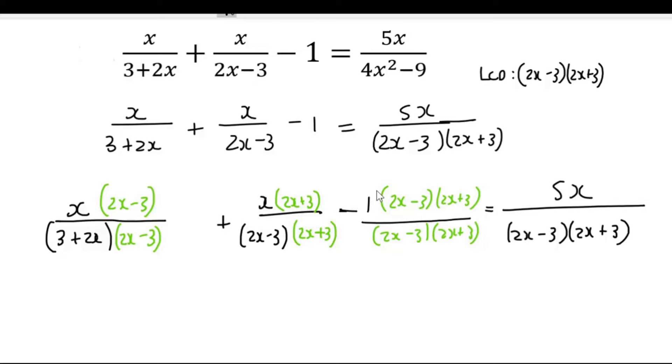And so guys, if you look carefully, I've gone and added everything that needs to be added. So for example, this one didn't have a 2x minus 3, so I multiplied it with the 2x minus 3 top and bottom. This one didn't have a 2x plus 3, so I did it there. This one didn't have any of them, and then this one had both.